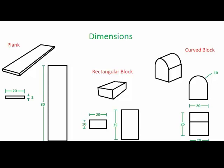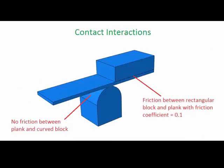The rectangular and curved blocks are made of AISI 1005 steel with a mass density of 7872 kg per meter cubed, a Young's modulus of 200 GPa, and a Poisson's ratio of 0.29.